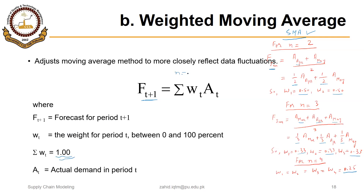For example, if we are using n=3 and forecasting for June, we could assign 10% weight to the actual demand of March, 30% weight to the actual demand of April, and the remaining 60% to the actual demand of May. The sum of the weights equals 1, which is an important condition to be satisfied.